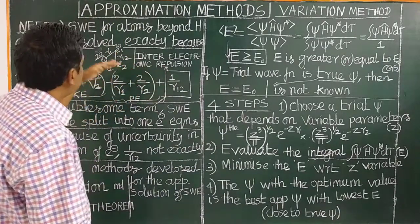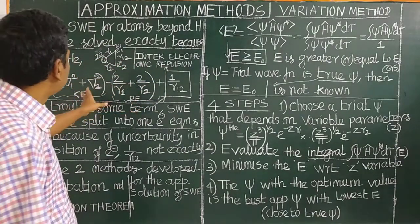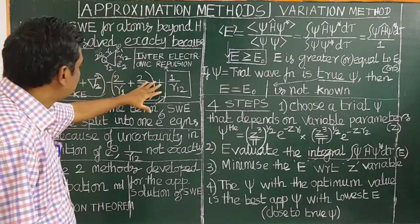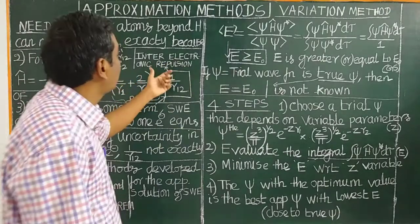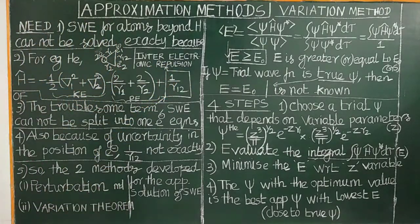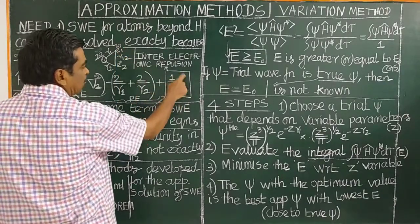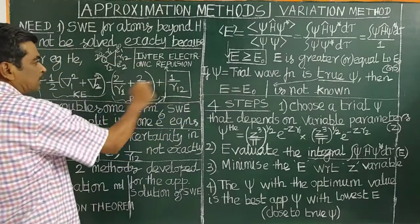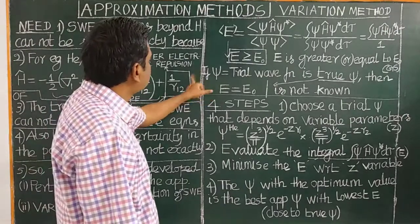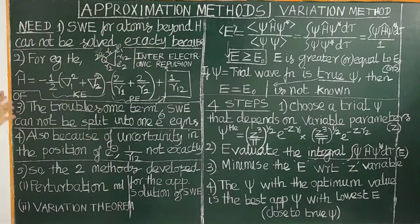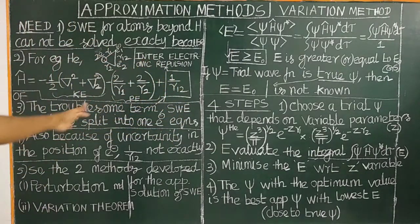In addition to the kinetic energy term and the one-electron potential energy term, there is an additional term — the inter-electronic repulsion term. The inter-electronic repulsion term is 1/R12, which is the reciprocal of the distance between electron 1 and electron 2. This is expressed in atomic units.